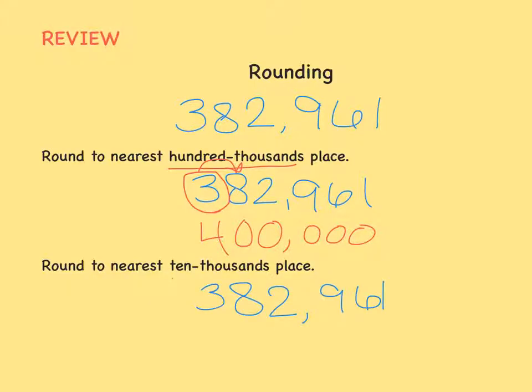This number rounds up to 400,000 when rounded to the nearest hundred thousandths place. Now let's round it to the nearest ten thousandths place. So we circle the place we're rounding to in the ten thousandths place, look next door for what to do, and since we see a two, we know it's going to round down. So the eight stays the same, everything to the right becomes a zero, and everything to the left stays the same.